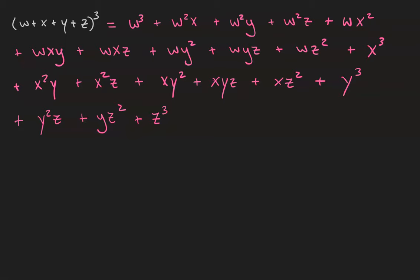Now we apply the coefficients. We remember that if any of the exponents are a 3, our coefficient is a 1. If any of the exponents are a 2, our coefficient is 3. And if all of the exponents are 1's, our coefficient is a 6. So w cubed gets a coefficient of 1. w squared x gets a coefficient of 3. w squared y gets a coefficient of 3. So does w squared z, so does w x squared. w x y gets a coefficient of 6. Same with w x z.